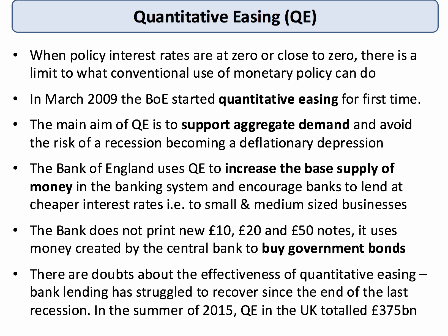Keynes talked, for example, about a liquidity trap being experienced. In the spring of 2009, the Bank of England, the UK's central bank, started to use quantitative easing, or QE, for the first time. The main aim of quantitative easing is to support the level of and growth of aggregate demand in the economy, and avoid the risk of a cyclical recession becoming a much deeper deflationary depression.